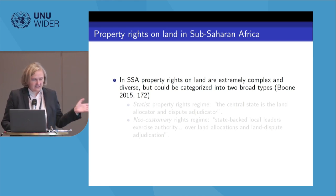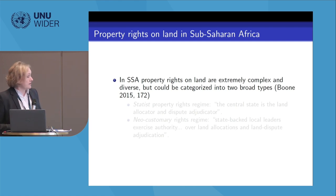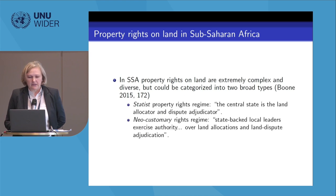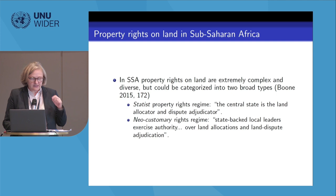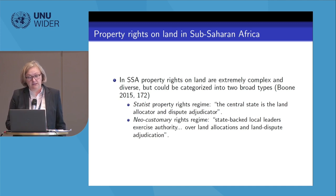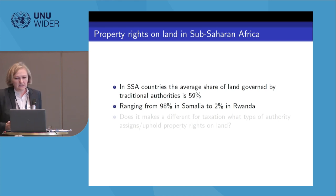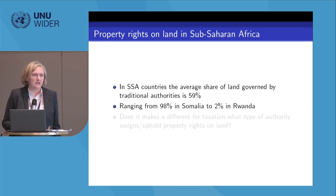We made reference to a lot of research that points to this complexity. However, for the sake of argument it can be categorized into two broad types, based on research by Katrin Bund who did a lot of research on land in Africa. First, the statist property rights regime, where the central state is the land allocator and dispute adjudicator. Second, neo-customary rights regimes, where state-backed local leaders exercise authority over land allocations and land dispute adjudication.